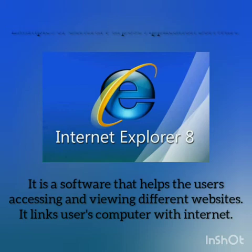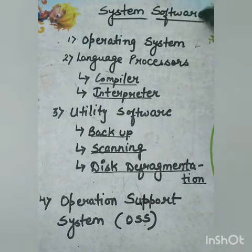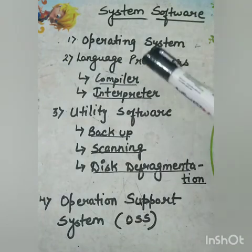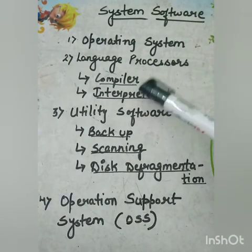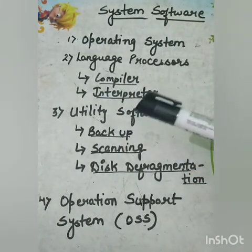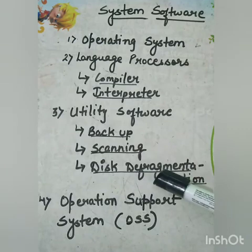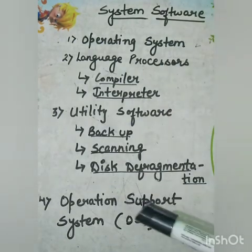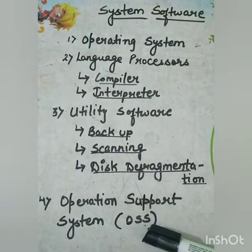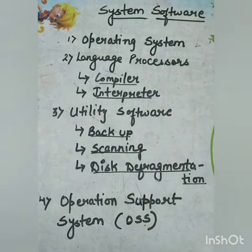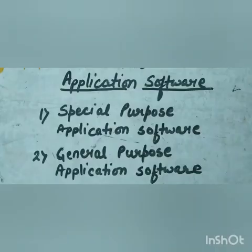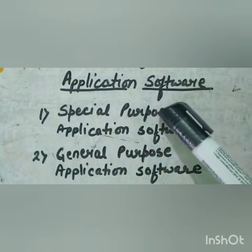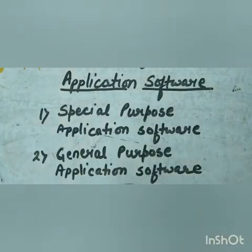Let's take a quick recap of what we have learned today. We discussed about various system softwares like the operating system, and language processors which include compiler and interpreter software. Next, we studied about utility software — backup, scanning, and disk defragmentation are examples. We also studied about the Operation Support System — these are all examples of system software. Then we discussed application software: there are two types — special purpose and general purpose application software.